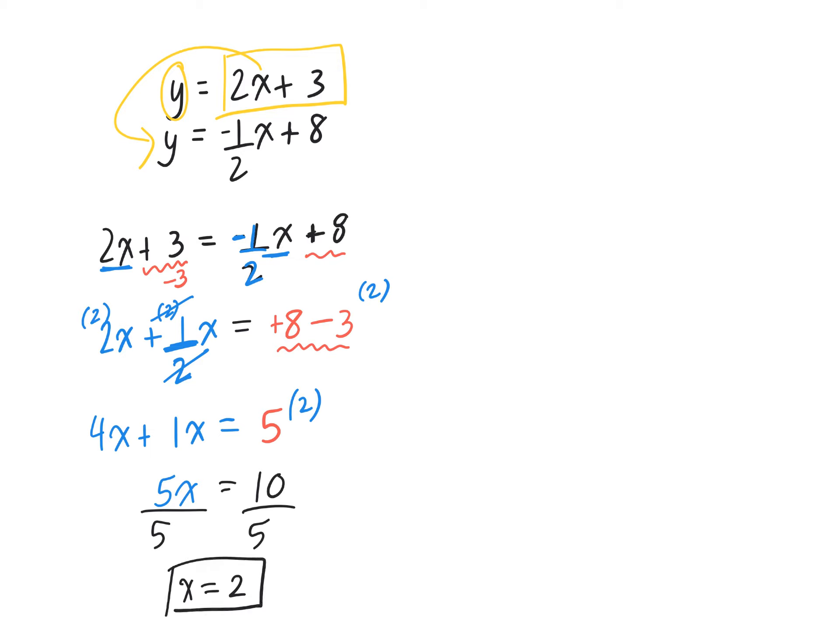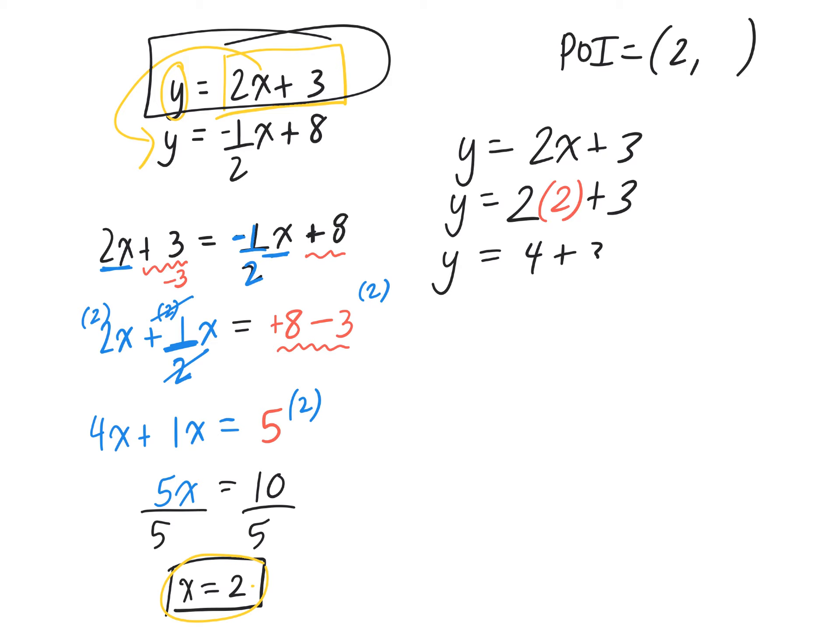So I'm trying to find the point of intersection. Right now I know it's located at 2 something. Which equation should I plug this value into? The first one, because there's no fractions. So y equals 2x plus 3. I'm going to replace x with 2. So y equals 4 plus 3. Y equals 7. Point of intersection is (2, 7).